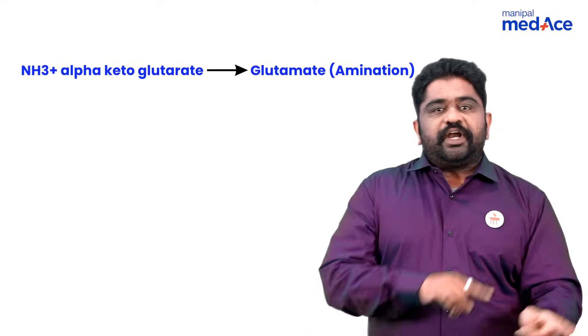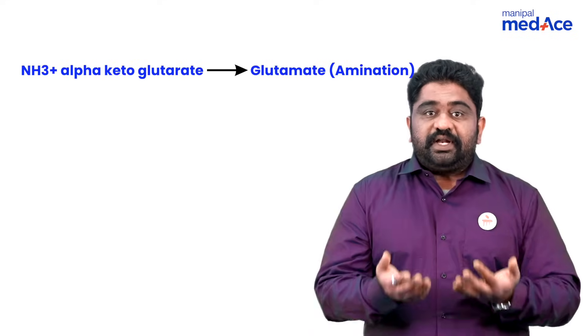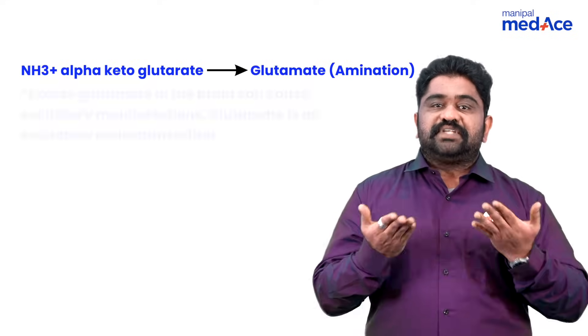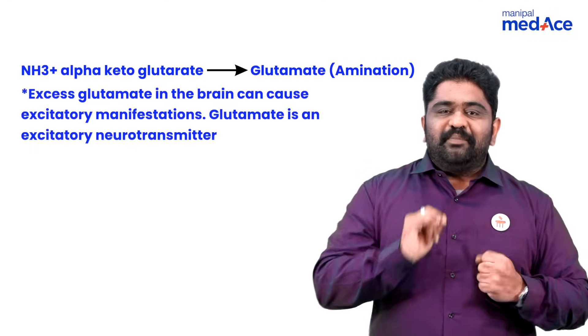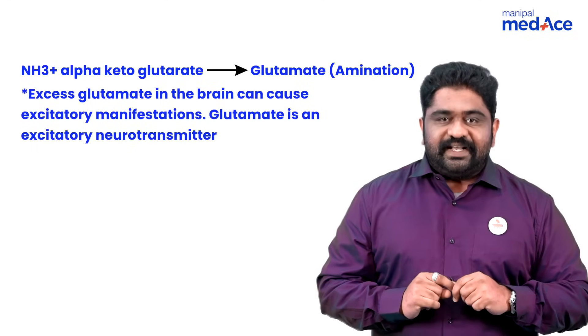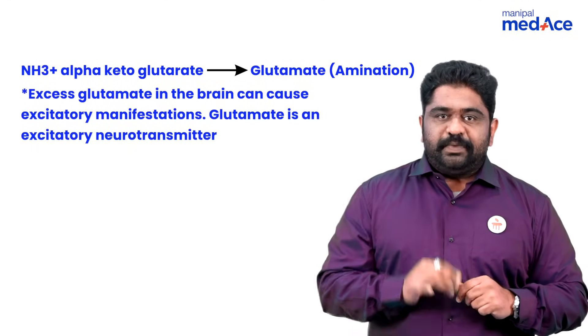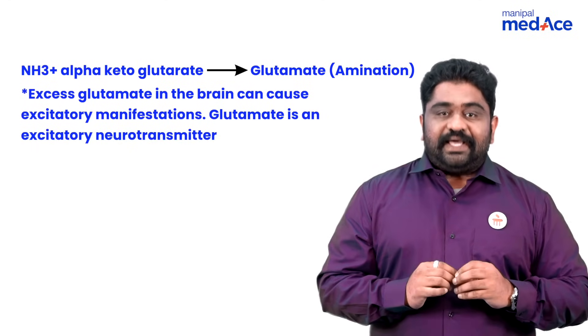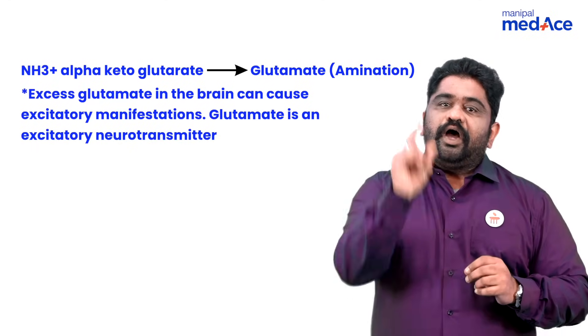Point number two: if the alpha-ketoglutarate has become glutamate and glutamate levels are higher, remember glutamate is an excitatory neurotransmitter — it can cause excitatory defect in the brain.